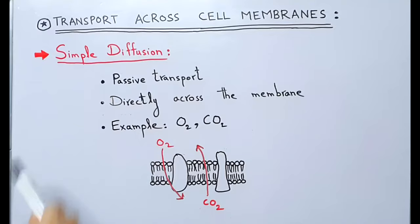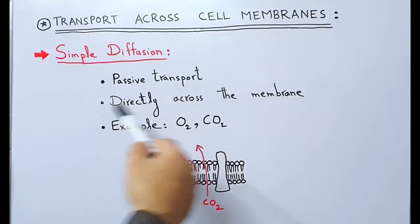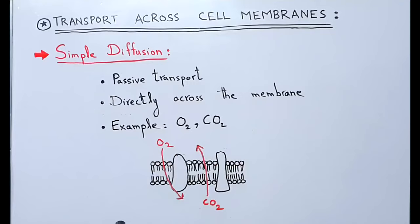Simple diffusion is a passive transport, which means energy is not required. It occurs directly across the membrane. Examples are oxygen and carbon dioxide. Oxygen can move from higher to lower concentration gradient, and carbon dioxide can also move from higher to lower concentration gradient directly across the cell membrane. They do not require any carrier.